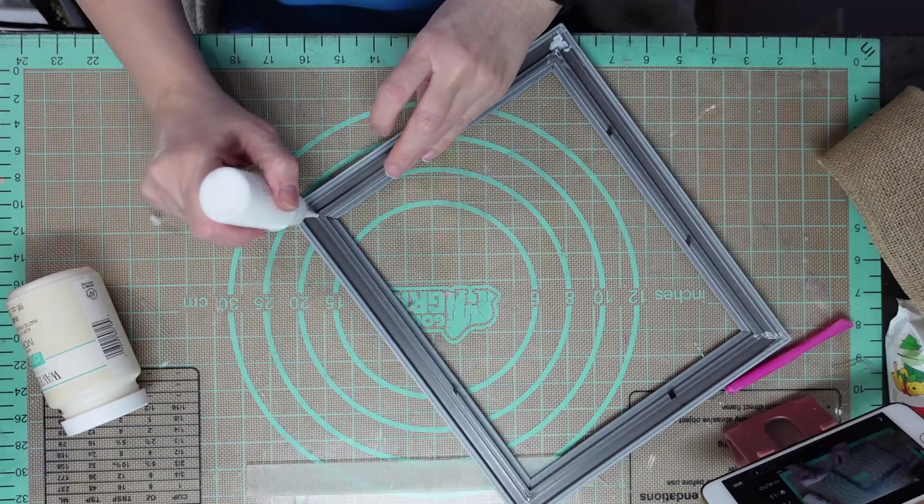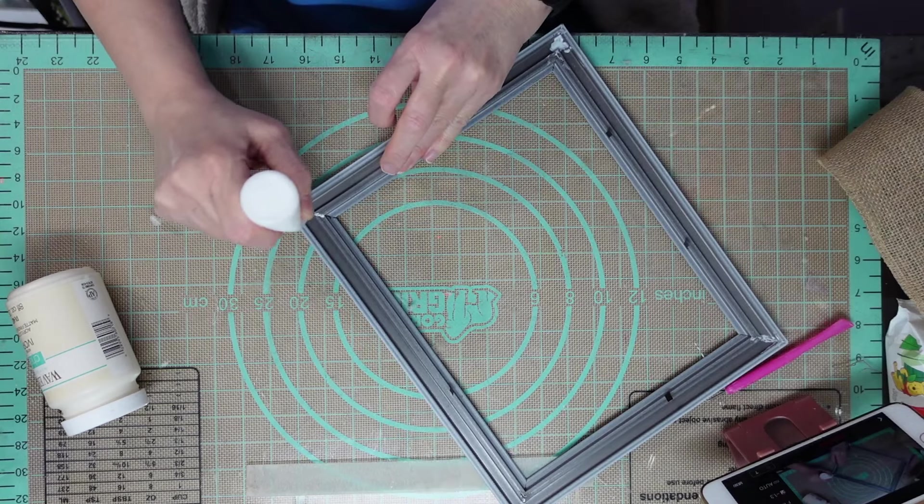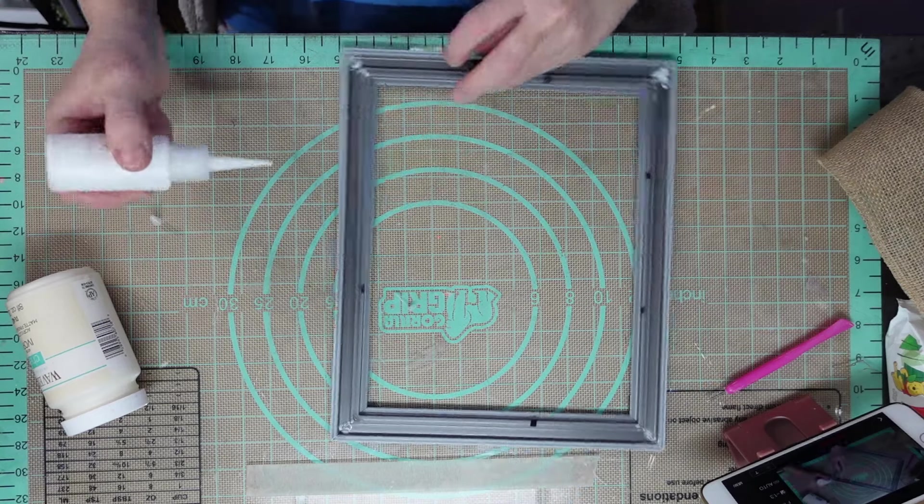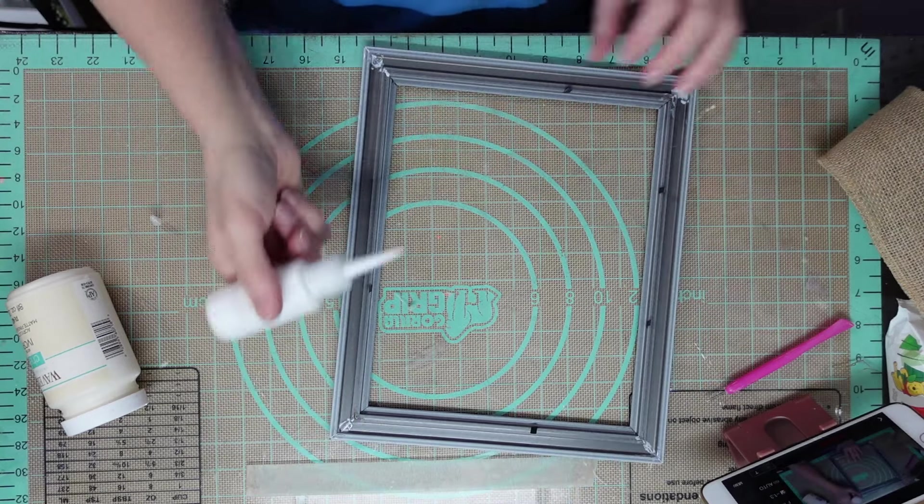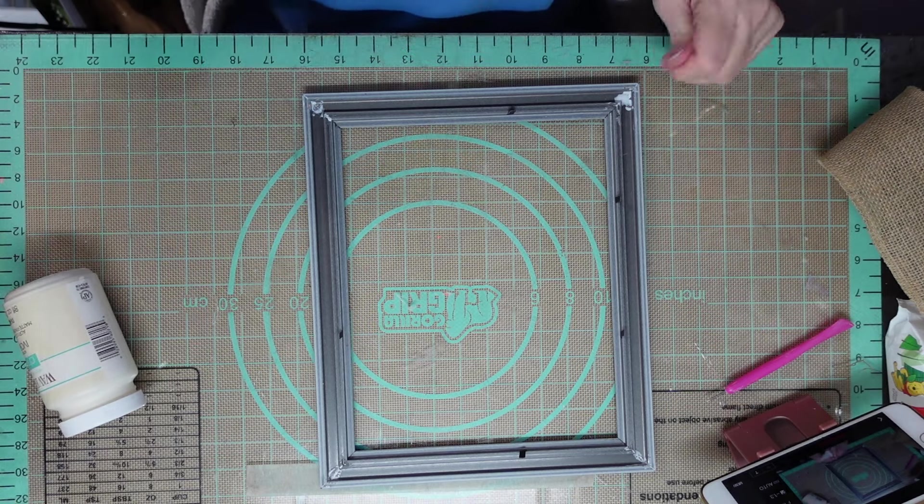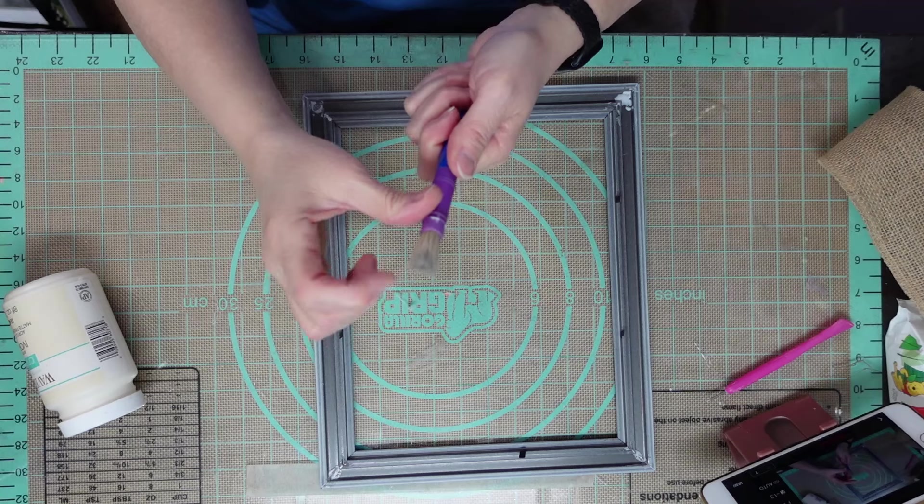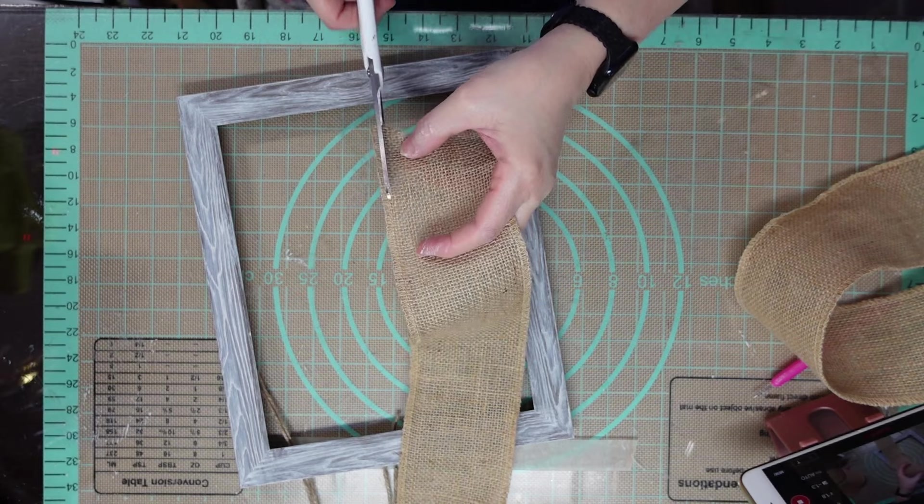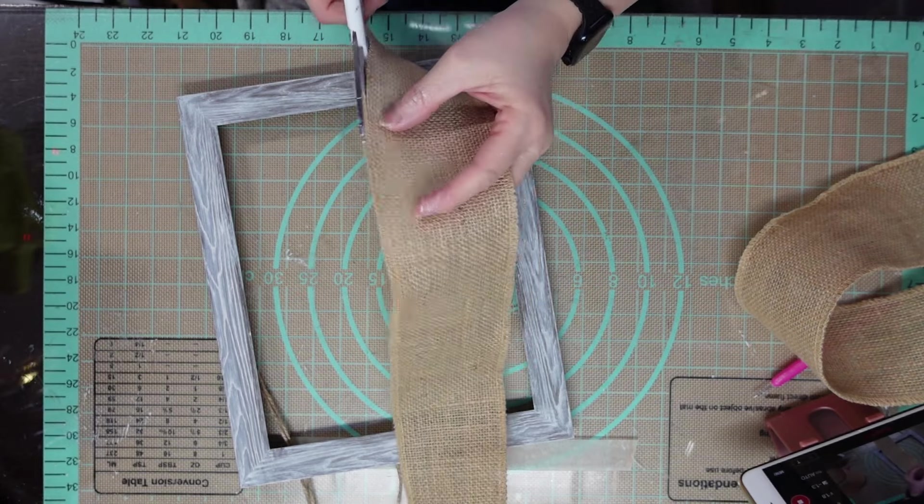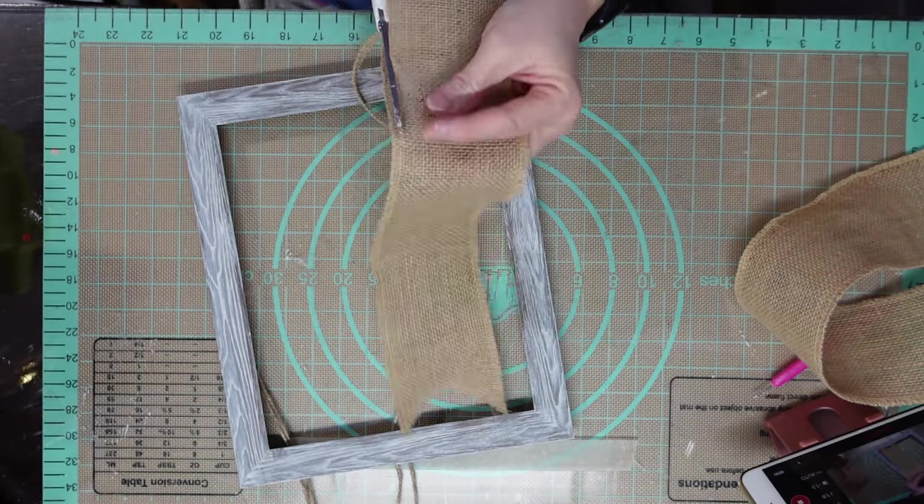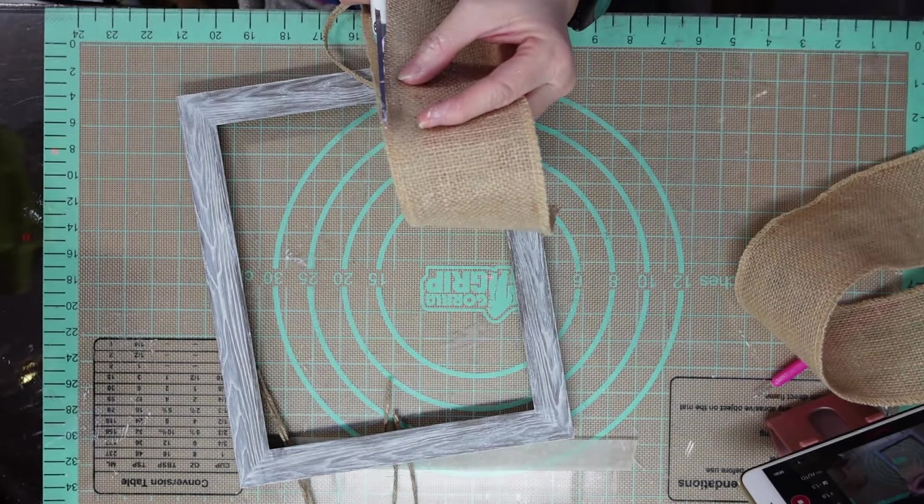I'm going to just glue my seams right here and make sure that dries. Before I take that, I'll take this Waverly ivory chalk paint and I'm going to use this brush from Dollar Tree and I am going to distress the front. So what I did was I painted it on and then wiped it off and then dry brushed over that. And I did the sides too.